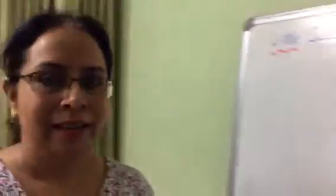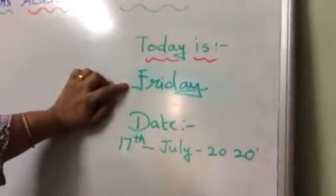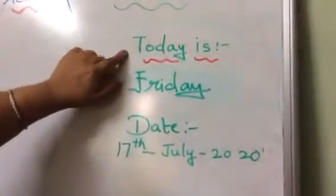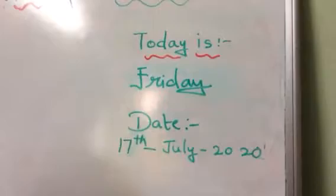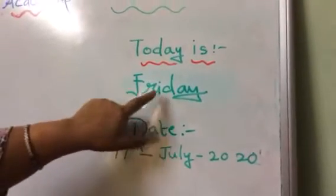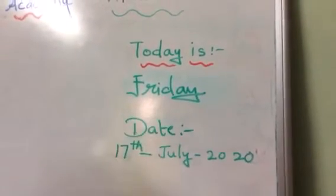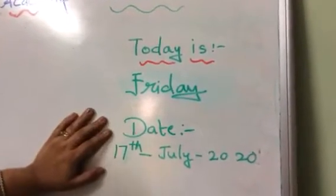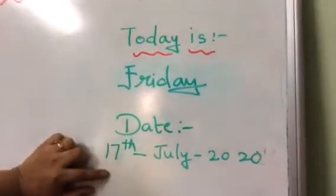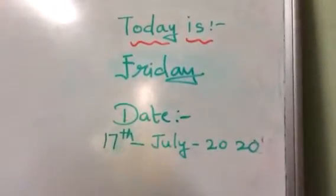Today, what are we going to do? Let's see what's the day. The day is Friday. Today is Friday — F-R-I-D-A-Y. Friday. And what is the date? 17th July 2020.